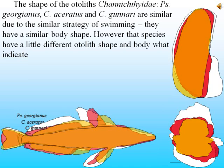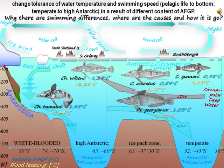Post-larvae of Georgianus do not occur at the surface; they have high activity of antifreeze proteins AFGP and from that could swim in warm water. The shape of otoliths of Chaenichthyidae — Georgianus, Aceratus, and Gunnari — are similar due to similar swimming strategy and body shape. However, species have slightly different otolith shape and body, indicating differences in water temperature tolerance and swimming speed, from pelagic to benthic life, temperate to high Antarctic, resulting from different contents of antifreeze protein AFGP.